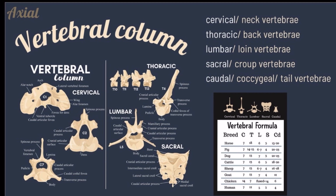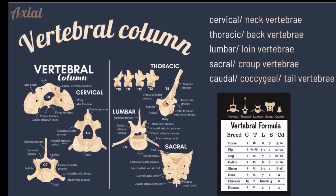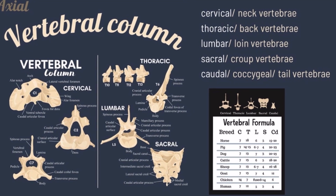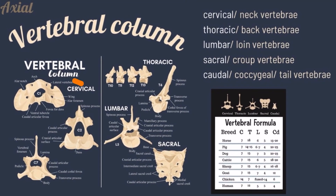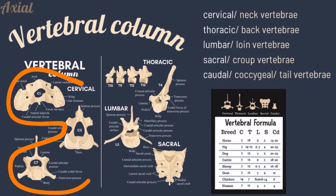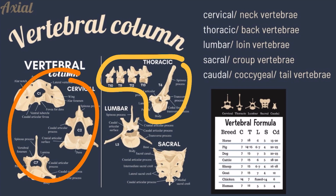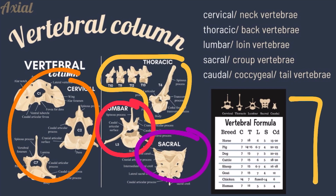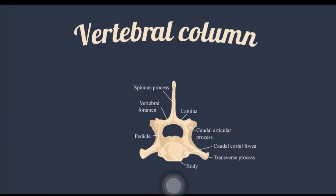The vertebral column is composed of a number of unpaired bones arranged in a series along the midline of the body, extending from the base of the skull to the tip of the tail. The cervical vertebrae are also called neck vertebrae. The thoracic vertebrae are also called back vertebrae. The lumbar vertebrae are also called loin vertebrae. The sacral vertebrae are also called croup vertebrae. The caudal vertebrae are also called coccygeal vertebrae. The parts of the typical vertebra include the body, the arc, and the process. The body is a cylindrical mass forming the ventral part of the vertebra and the floor of the vertebral foramen.